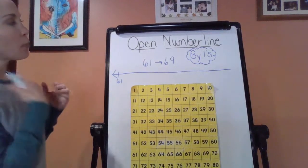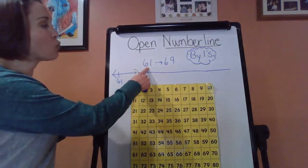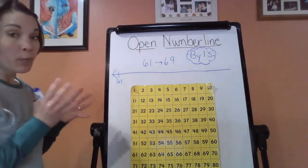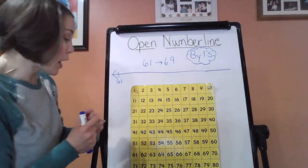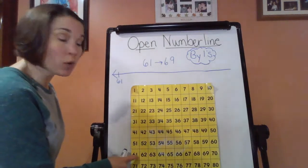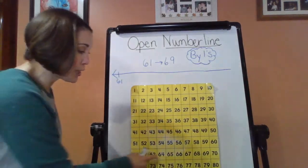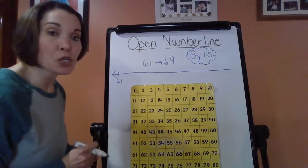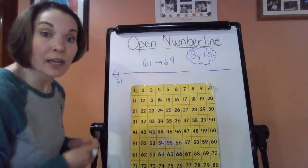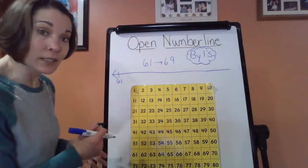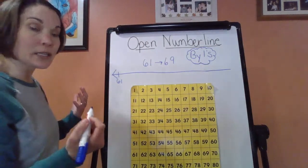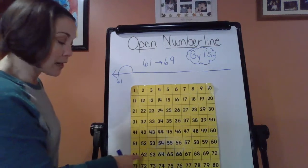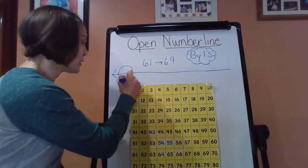We're back. So now I change things up a little bit. I'm going from 61 to 69 this time. We're still counting by one, so we're starting at 61, going in that across motion in that row. We're going to use those little hops to show how many hops it's going to take us to get from 61 to 69. So we start at 61, and then obviously the next number is going to be 62.